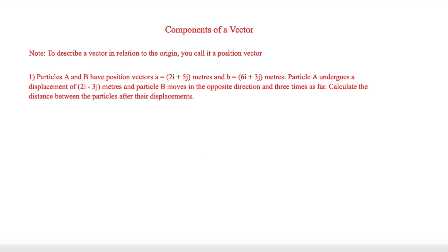So for the next question, we have to have a slight idea of what a position vector is. And to describe a vector in relation to the origin, which is at 0, 0, you call it a position vector.